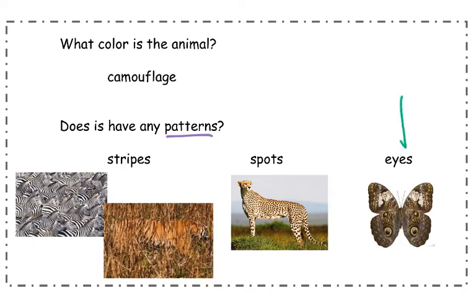Another example of a pattern is eyes. Some animals, like this butterfly, will have spots that look like eyes to scare away things that want to eat them. If you saw two big eyes looking at you, you wouldn't want to eat this butterfly. So this butterfly uses these spots that look like eyes to scare away other animals.